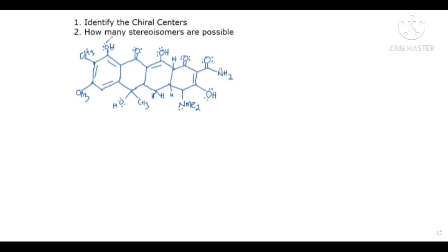This one here has two lone pairs, which are considered the same, so it's also out of the question. For the benzene ring, because of the double bonds, those carbons also do not qualify as chiral centers, because each of those carbons will have only three groups attached to them, not four different groups.